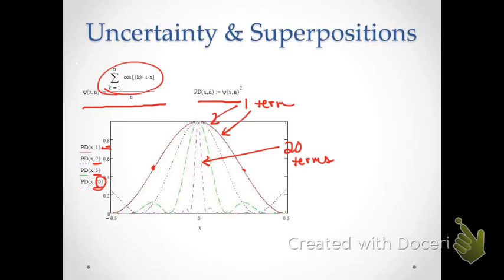The 20-term function is much narrower, so it has much less position uncertainty than the one-term function. In general, the more terms we have in the superposition, the narrower the peak gets — so more terms means more certain position, or less position uncertainty. We can clearly see a connection between the number of terms and the uncertainty in position.